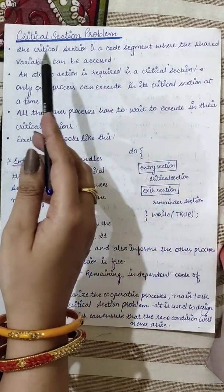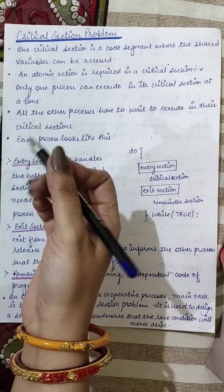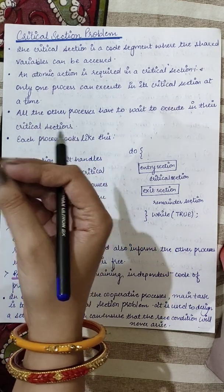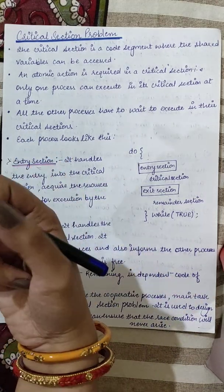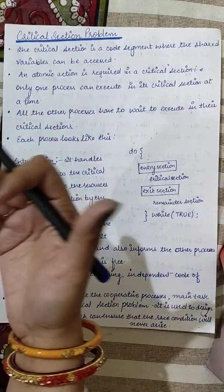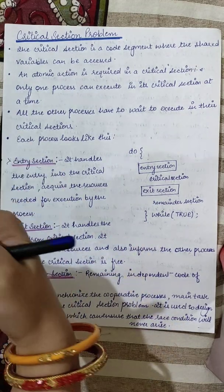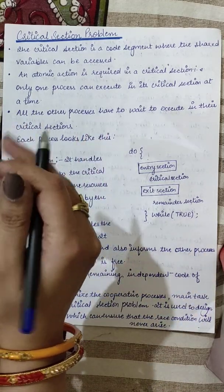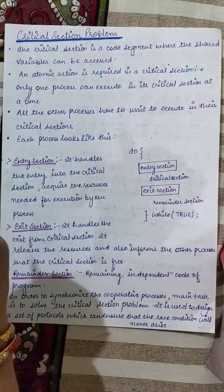So what happens in the critical section? A critical section is a code segment where the shared variables can be accessed. The critical section problem is that when one process is executing in the critical section and the shared resource is modified, data inconsistencies and race conditions will be generated. That is what we have to avoid — that is the critical section problem.